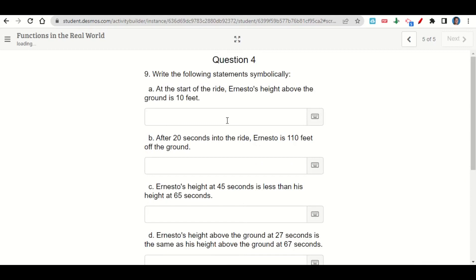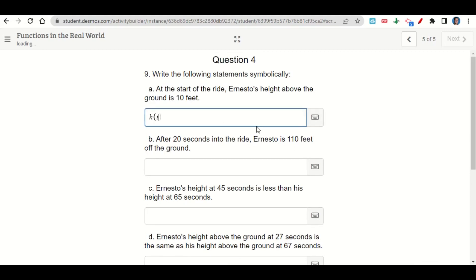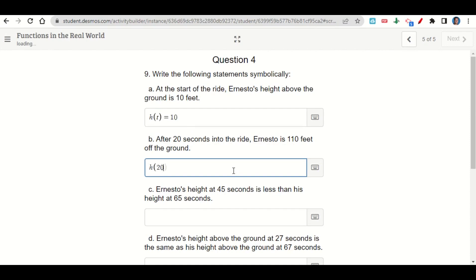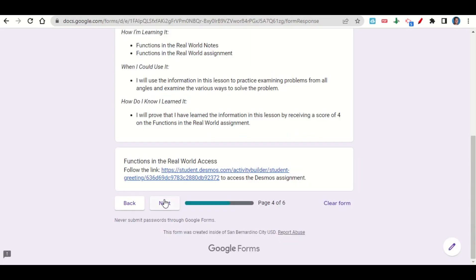And then we'll answer them symbolically. So at the start of the ride, Ernesto's height above the ground is 10 feet. We're going to say h of t is equal to 10, because that was his height. After 20 seconds into the ride, Ernesto is 110 feet off the ground. Well, we'd say then h of 20 seconds, because that was the amount of time, is equal to 110. So you'll just answer each of these. And then when you're done with that, you'll go ahead and go back to your Google form and click next. This will take you to your before you go. Go ahead and fill out your before you go, and then submit your work on Google Classroom.